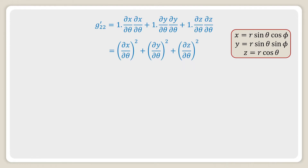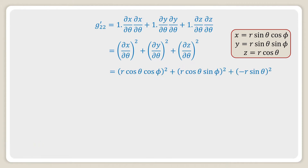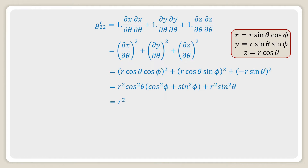Using x = r sinθ cosφ, y = r sinθ sinφ, z = r cosθ, we get (r cosθ cosφ)² + (r cosθ sinφ)² + (−r sinθ)². This equals r²cos²θ(cos²φ + sin²φ) + r²sin²θ = r²cos²θ + r²sin²θ = r². So g'₂₂ = r².